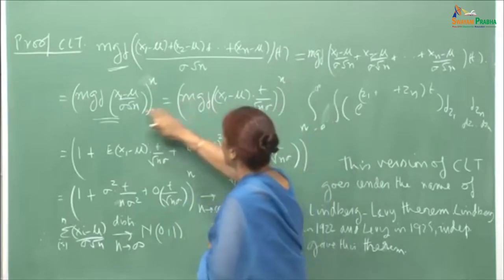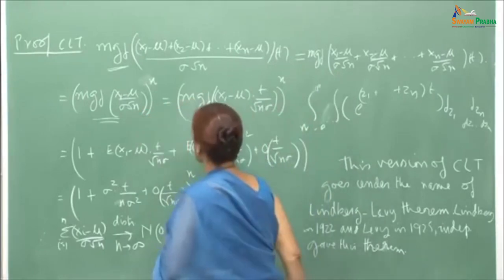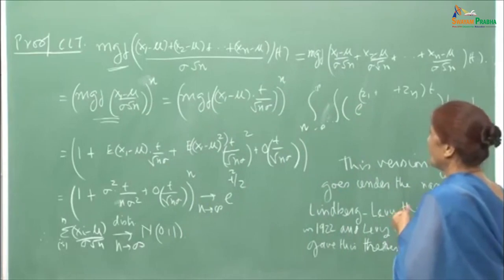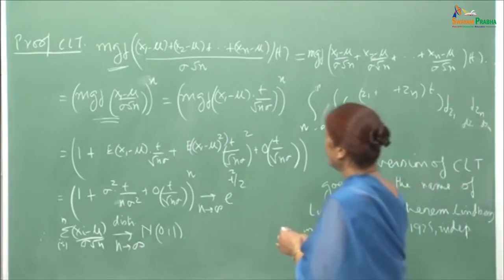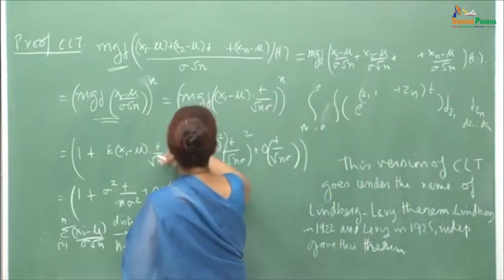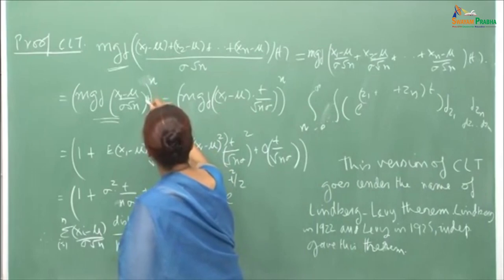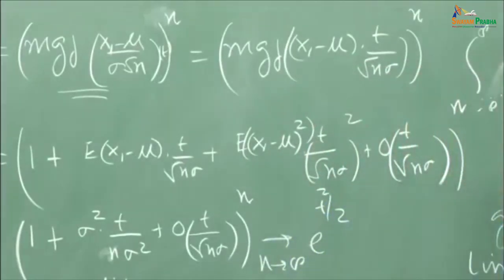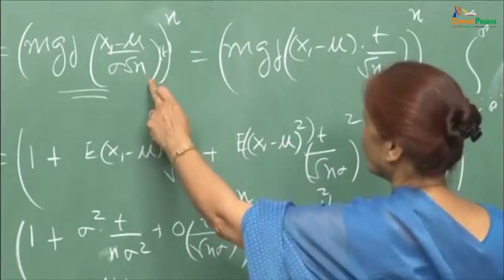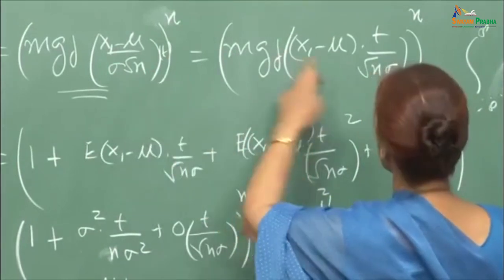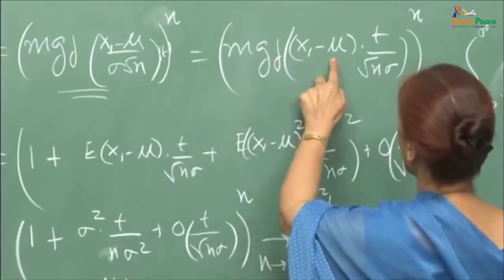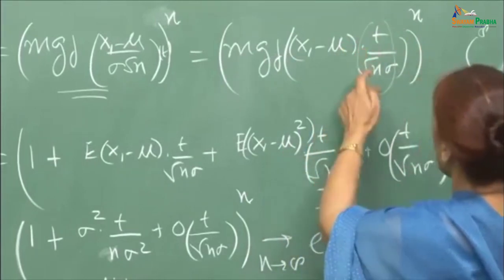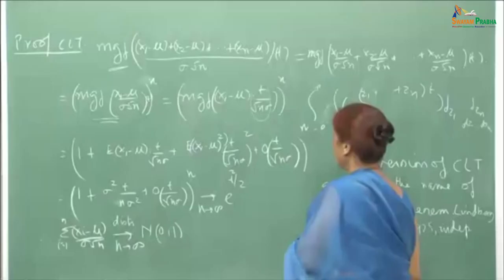This MGF can be written as the MGF of (x₁ − μ) evaluated at t/(σ√n), raised to the nth power, because of independence and identical distribution. Now I expand this MGF of (x₁ − μ) at t/(σ√n) as an expectation: E[1 + tx + (tx)²/2! + ...], which is the expansion of e^{tx}. I take the expectation inside.